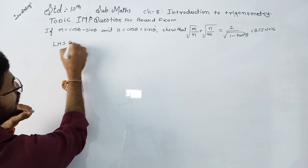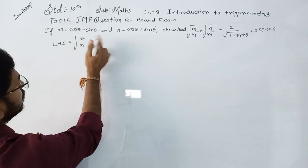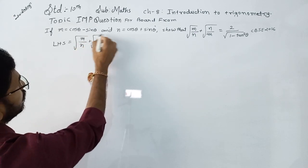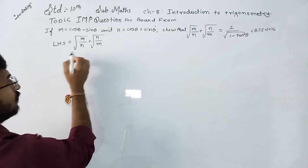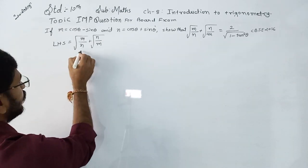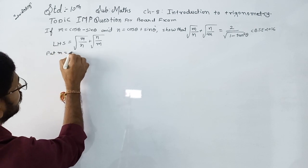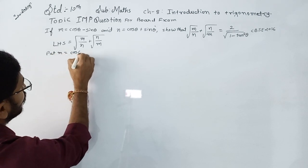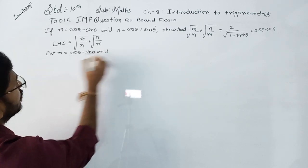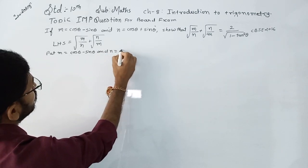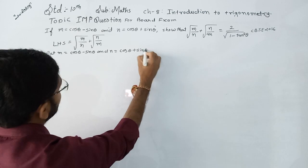We write the left hand side equal to square root of M upon N plus square root of N upon M. We put the value: M is equal to cos theta minus sin theta and N is equal to cos theta plus sin theta.